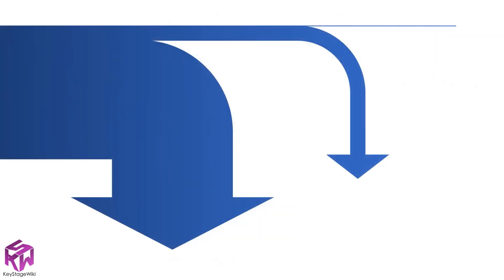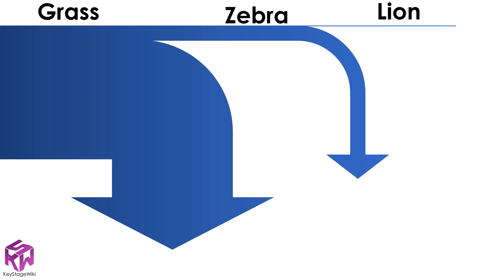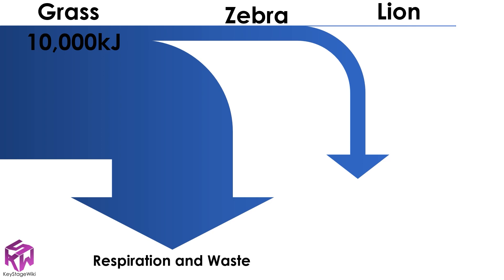Our Sankey diagram has three stages: the grass, the zebra, and the lion. If the grass were to gain 10,000 kilojoules of energy from the Sun, some of that would be lost in respiration. When the zebra eat the grass, the zebra can't digest all of it, so some of that energy is also wasted. That means the zebra will only get around 1,000 kilojoules of energy.